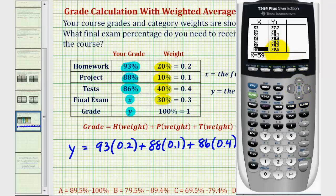We can see here that the lowest B, which is 79.5%, would occur if you scored 59% on the final exam. But of course, you'll do much better than that.